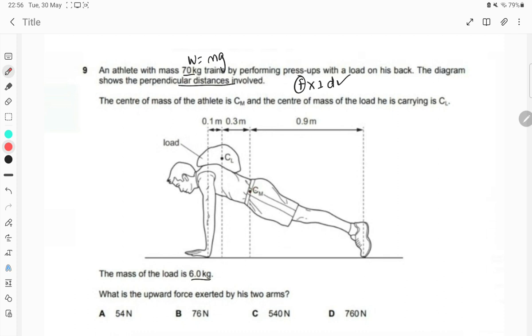Marking out the forces for you all. So force number 1 from the center of mass which is 70 into 10, that is 700 Newton. Force number 2 is the weight of the load which is 6 into 10, that is 60 Newton.